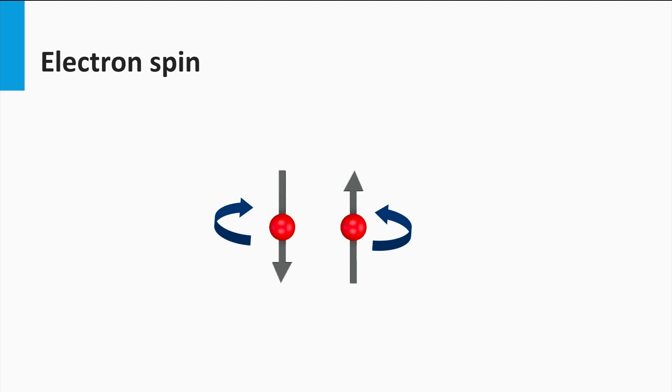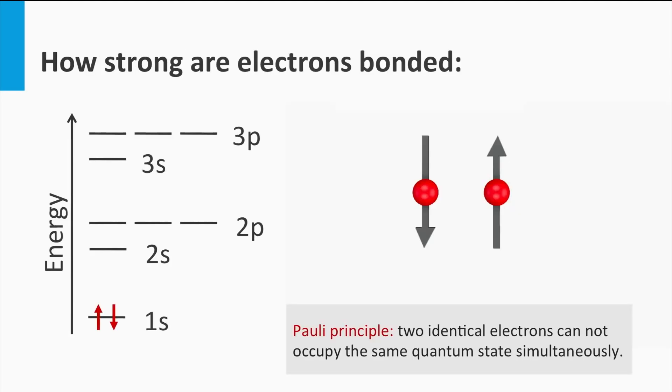This means that an individual electron can be in two quantum states, spin up and spin down. Secondly, I introduce the Pauli exclusion principle, which tells us that two identical electrons cannot occupy the same quantum state simultaneously. Don't worry about why this is the case, just for the moment accept that in nature all electrons obey this law.